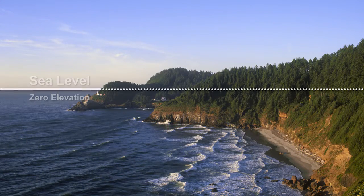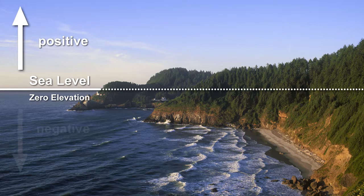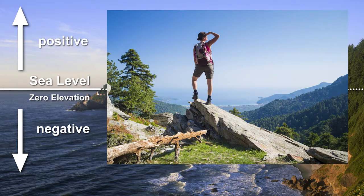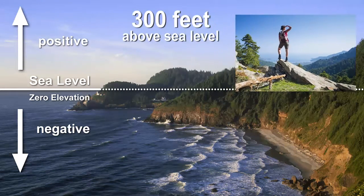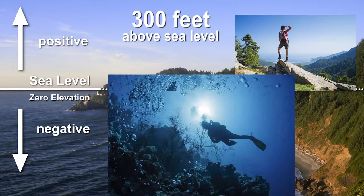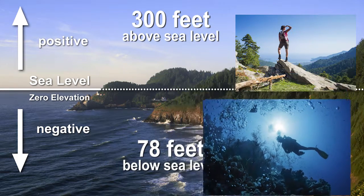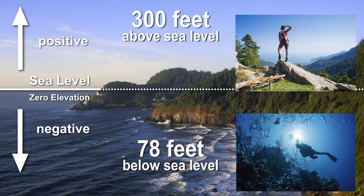Elevation: sea level is said to be zero elevation and everything is measured from that point. Any point above sea level is positive and anything below sea level is negative. If a hiker is hiking up a mountain, she will be gaining elevation — the feet she climbs will be positive numbers and we could say she is 300 feet above sea level. A deep sea diver will be going below sea level, so he would be losing elevation below zero. The feet he declines will be negative numbers — we would say he is 78 feet below sea level.